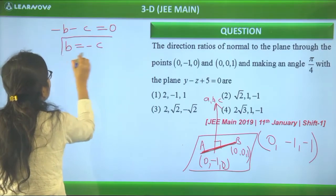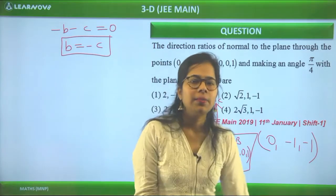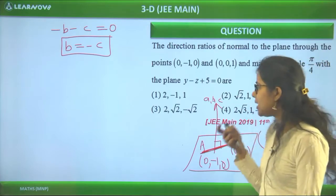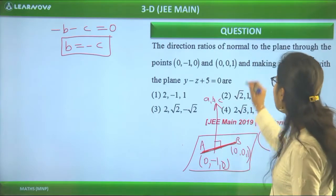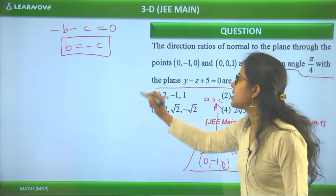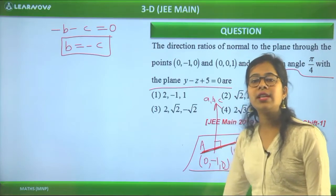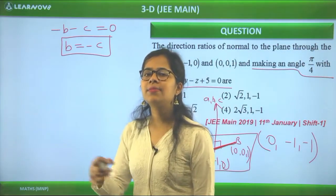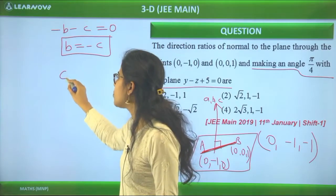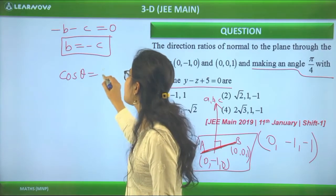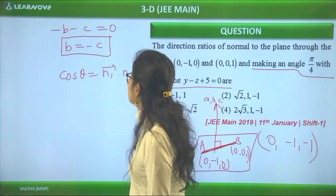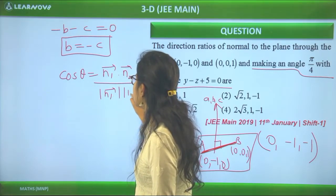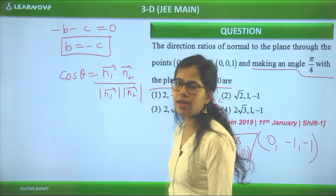For the second relation, we use the angle condition. The plane makes 45° with the plane y - z = 0, whose normal has direction ratios (0, 1, -1). The formula is cos θ = (n₁·n₂)/(|n₁||n₂|). With θ = 45°, cos 45° = 1/√2. So 1/√2 = (0·A + 1·B + (-1)·C) / (√(A² + B² + C²) · √2). This gives (B - C) / √(A² + B² + C²) = 1.